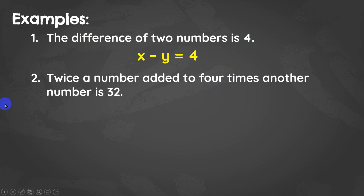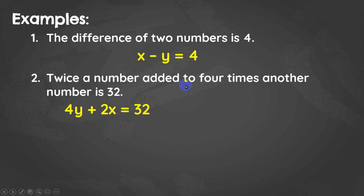Next example: 'twice a number added to four times another number is 32.' The first number is represented by x and another number by y. When we say twice, we multiply by two; four times means multiply by four. When we say 'added to,' it means the first term is being added to four times another — so we have 4y plus 2x equals 32, which we can rewrite as 2x plus 4y equals 32 since addition is commutative.